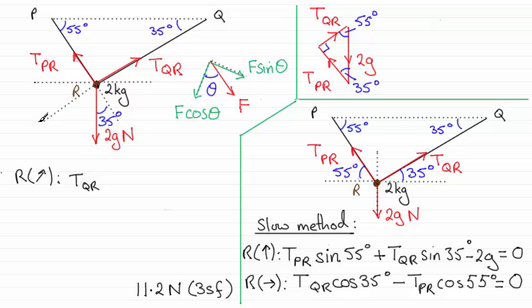And that component acts in the opposite sense to this. So it's going to be negative. And it's going to be the force times the sine of the angle 35. Because it doesn't include that angle of 35 degrees by this method here. So it's going to be 2g, the weight, times the sine of 35 degrees.